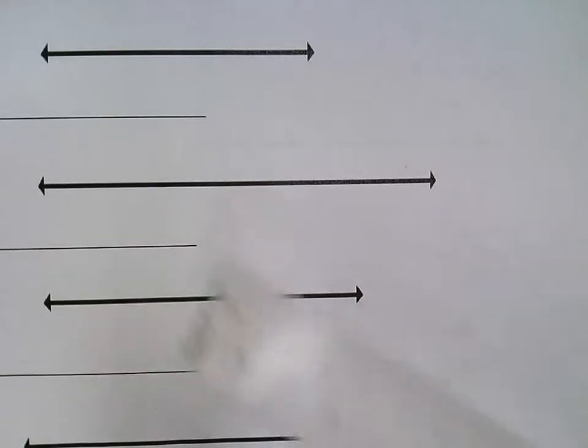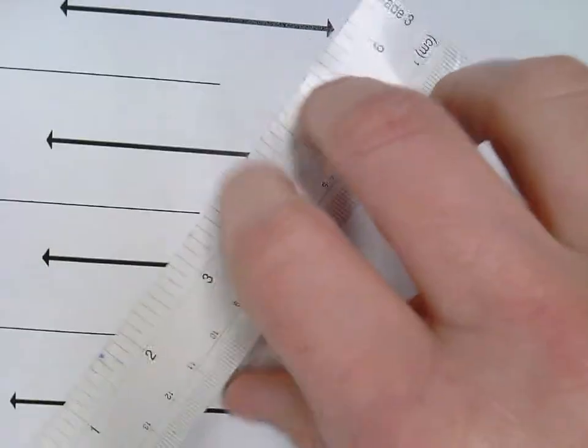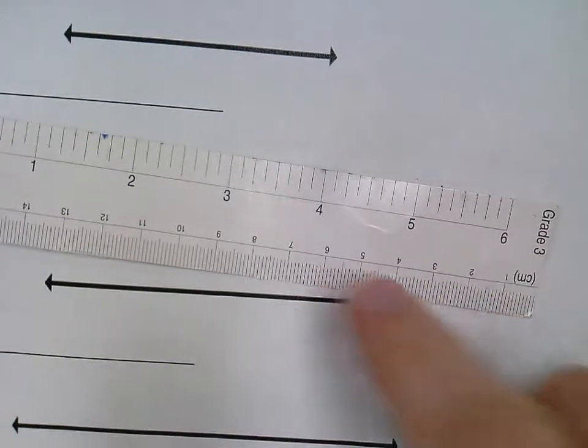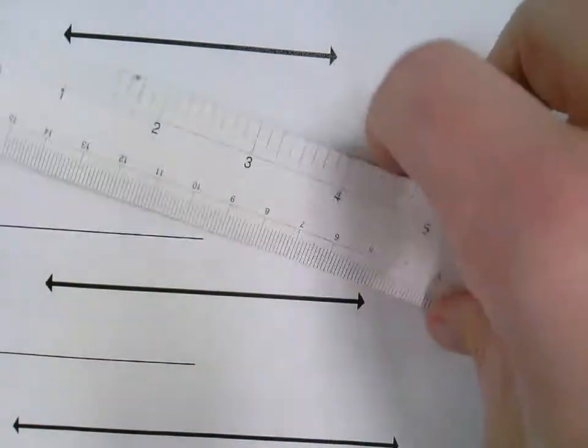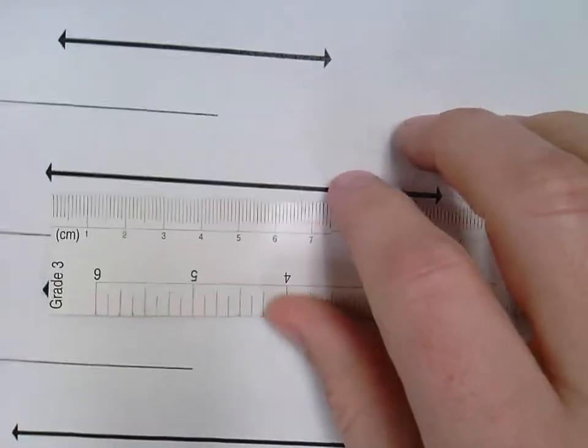Today we're going to talk about measuring to the nearest centimeter. Last time we talked about inches, so on one side of your ruler you have inches and on the other side you have centimeters.